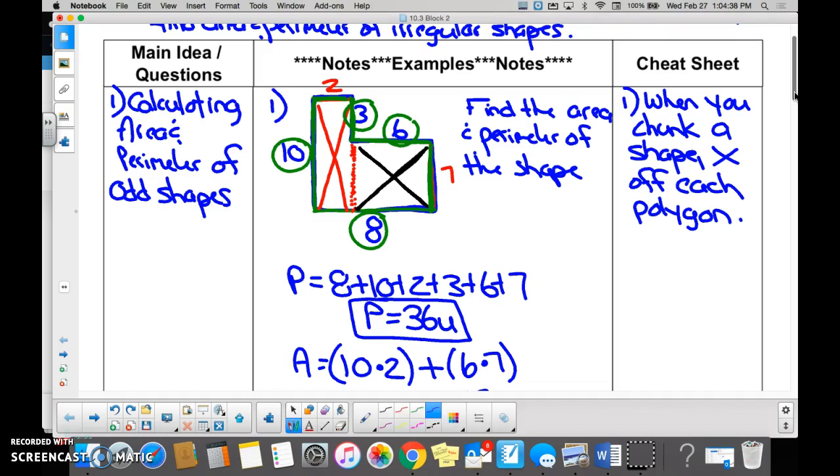And we knew this side was 3. So then this was the rest of this long side of 10, right? So 10 minus 3 is 7.